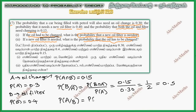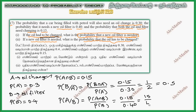So A intersection B is 0.15 and P of B is 0.4. So we have 0.15 divided by 0.4. If we cancel, we get 3 by 8, which equals 0.375.